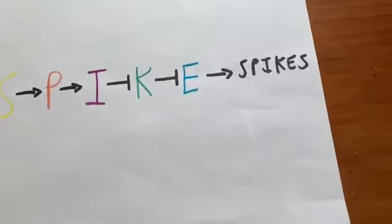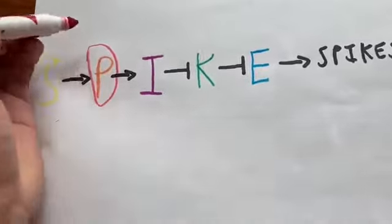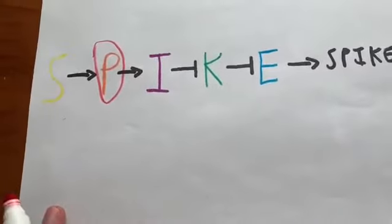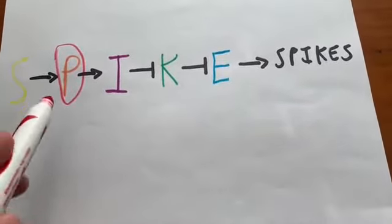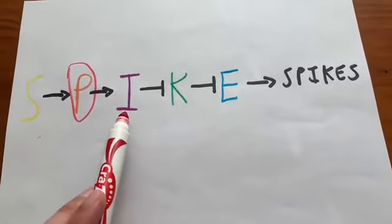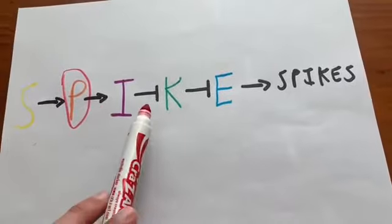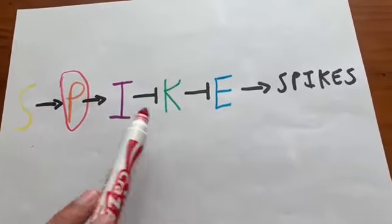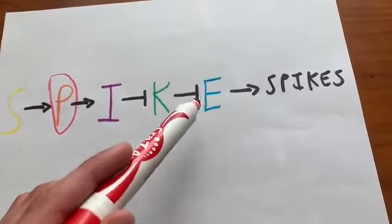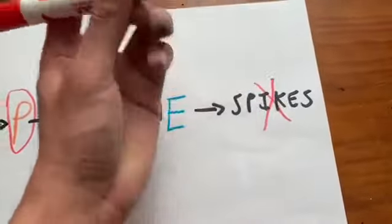Let's say P is mutant. So P would be mutant. In this case, S cannot activate P, P cannot activate I, I isn't repressing K, K represses E, so E cannot activate spikes. So no spikes are formed.